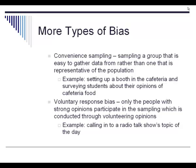Voluntary response bias is a type of bias in which only people with strong opinions participate in the sample. This happens a lot on radio talk shows where you can call in to give your opinion on the topic of the day. Only people with strong opinions are going to call in — the majority of the population isn't going to take the time to pick up the phone, so their opinions are never represented in the survey.